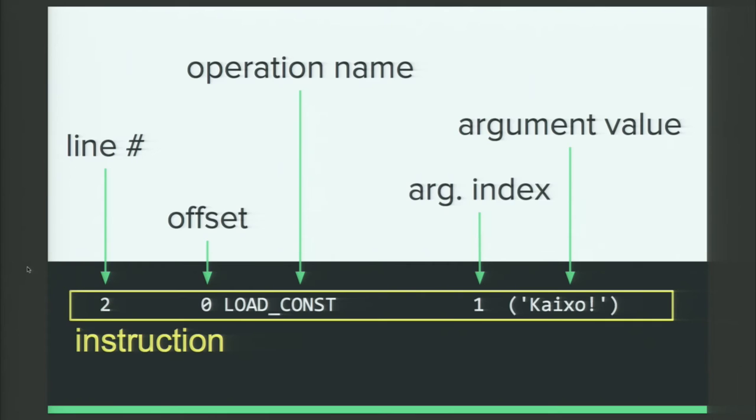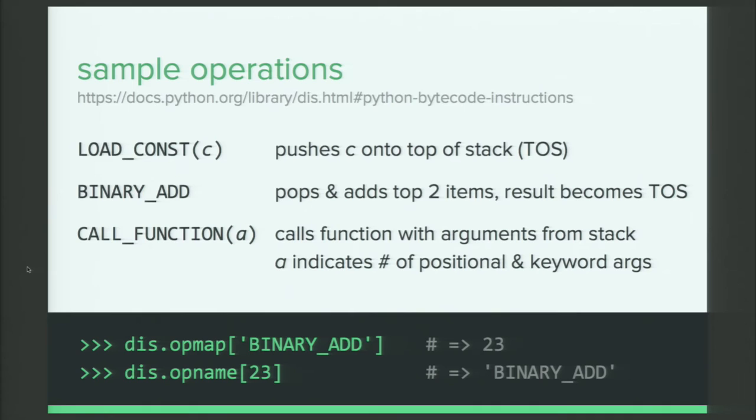So, some operations, we've already seen a load constant, which takes an argument C and it pushes C onto the top of the stack, TOS. Then there are things like binary add, which takes whatever is already on the top of the stack, the top two items, adds them together and puts that result on the top of the stack. And then there's things like call function, which its argument is a bit strange. Its argument tells it how many positional or keyword arguments that function is expecting, so that it knows how many objects to take off of the top of the stack and in which order to pass to that function.